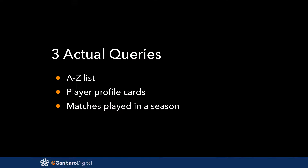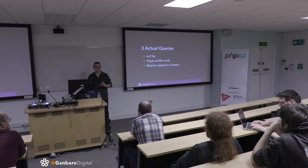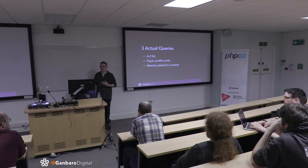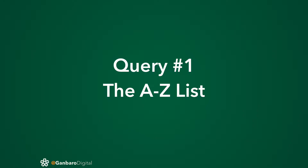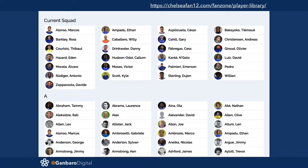This stuff may not have actually sunk in yet, but don't worry — we're going to go through some real queries. I'm going to share three actual queries that are powering the website right now. We're going to look at the A-to-Z list, how the player profile cards are constructed, and matches played in a season. I've picked these to show off different parts of what I like about Cypher and some other techniques we've learned along the way.